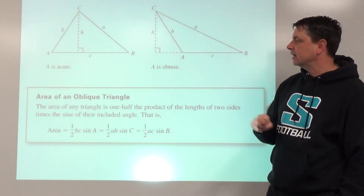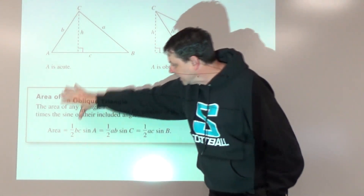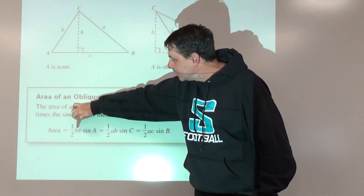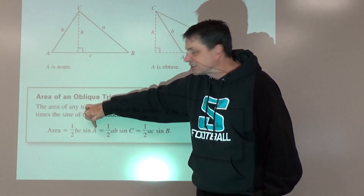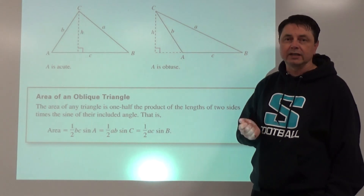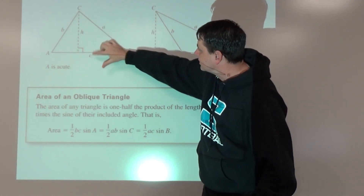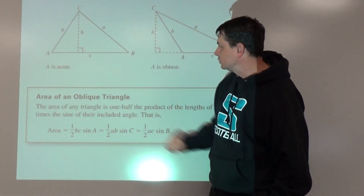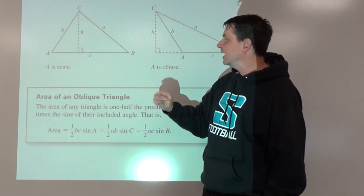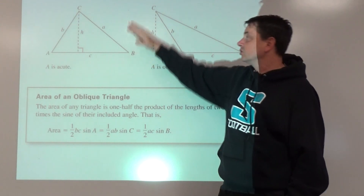Next we're going to look at finding the area of an oblique triangle. The formula says the area of a triangle equals one half times the product of two sides times the sine of the angle between them — a side-angle-side perspective. If we know two sides and the included angle, this formula works: area = ½ · a · b · sin(C).